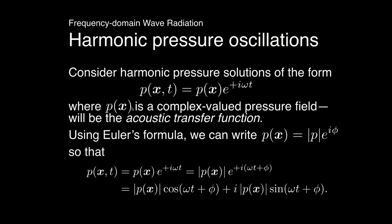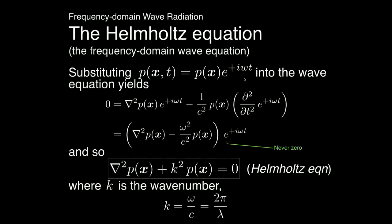Substituting the harmonic form into the wave equation, we take the time derivative — pulling down an ω² factor — and factor it. Since e^(iωt) is never zero, we end up with the Helmholtz equation, which is independent of time and governs only the spatial part of the transfer function. Here k is the wave number, related to 2π over the wavelength. For low frequencies (k→0), this reduces to the Laplace equation; at higher frequencies, it becomes a more challenging wave-like problem to solve.